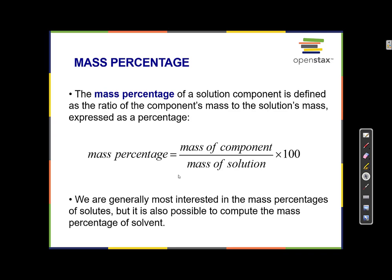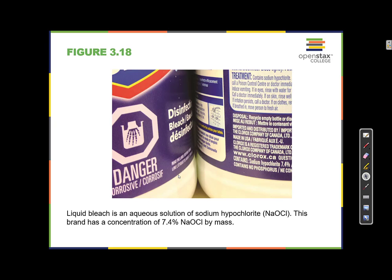We are generally most interested in the mass percentages of solutes, but it is also possible to compute the mass percentage of solvent — that would be the mass of the solvent divided by the mass of the solution. For example, liquid bleach is an aqueous solution of sodium hypochlorite. This brand has a concentration of 7.4% sodium hypochlorite by mass, meaning 7.4 grams of sodium hypochlorite per 100 grams of solution; the other 92.6 grams are water.